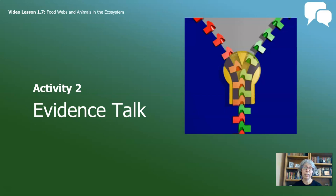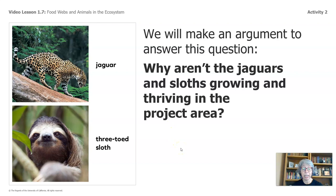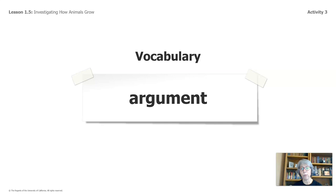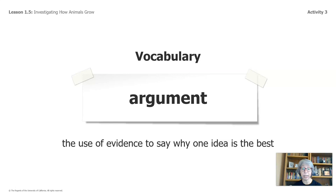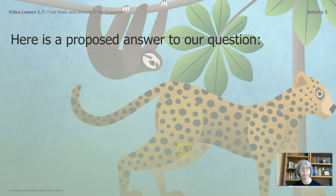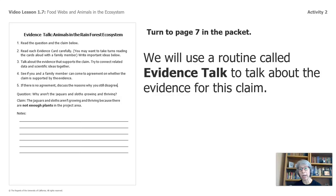Now we're on to activity two where we're going to be looking at more of our evidence together. We will make an argument to answer this question: why aren't jaguars and sloths growing and thriving in the project area? This is a vocabulary review — I want to make sure we're thinking about argument in the scientific way. An argument is not a disagreement. It certainly isn't fighting about ideas either. An argument is the use of evidence to say why one idea is the best. Here is a proposed answer to our question — our claim: the jaguars and sloths aren't growing and thriving because there are not enough plants in the project area.